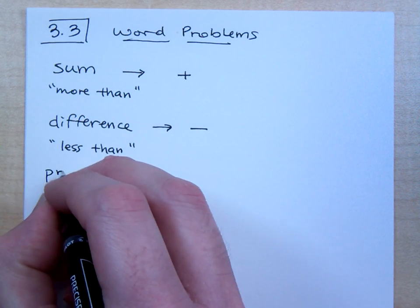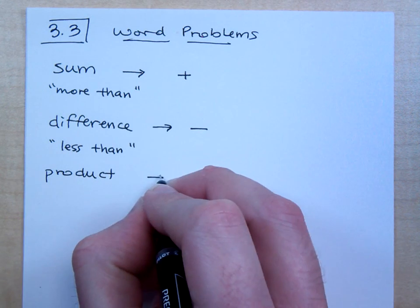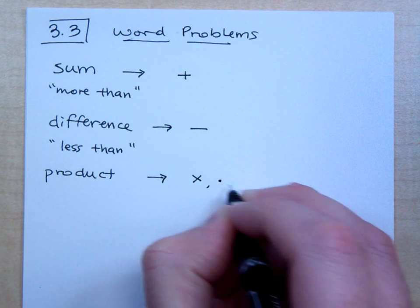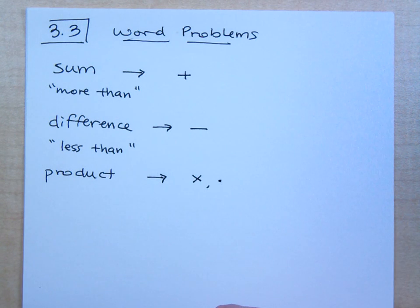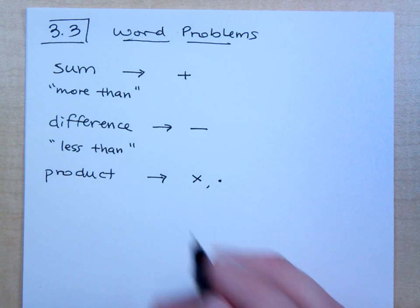And not that you'll be seeing it too much now, but the word product means what? It means multiplication. And so since we're dealing with variables, this is why we kind of stopped using the St. Andrew's cross multiplication when we used the raised dot.